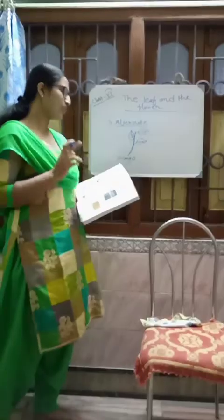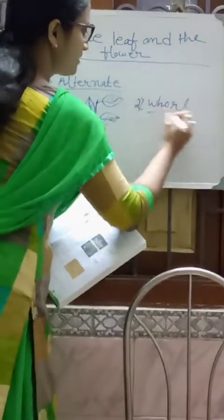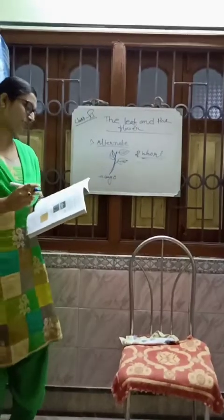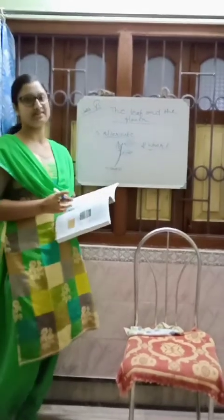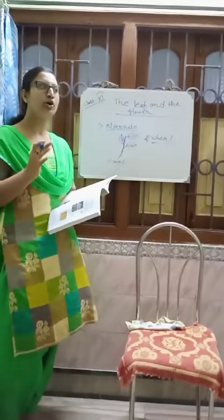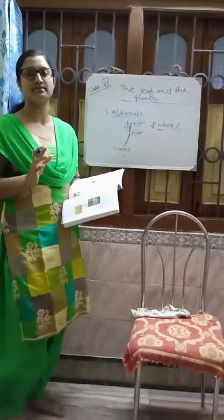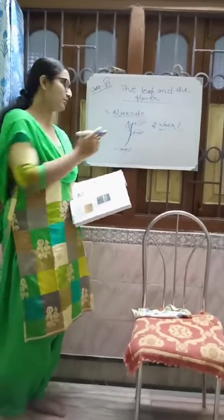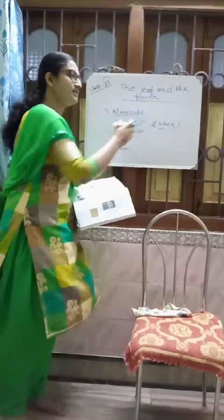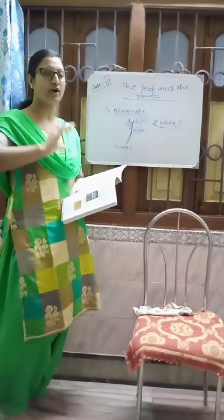The second type is the whorled arrangement. This type of arrangement is actually found in asparagus, which is a grass-like structure. In whorled arrangement, two or more leaves arise at each node, forming a bunch of leaves. This is called the whorled arrangement.